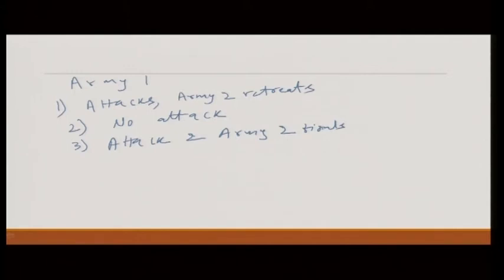We can give these ranks. We can give Army 1 a payoff of 2 if this happens, Army 1 gets 1 if no attack, and Army 1 gets 0 if fight. What is the best outcome for Army 2? The best outcome is not attack. We can give Army 2 a payoff of 2 if this happens, second best is retreat where Army 2 gets 1, and in the fight case Army 2 also gets 0.